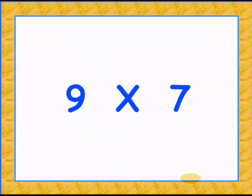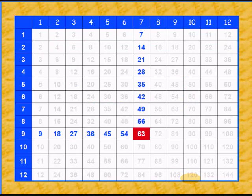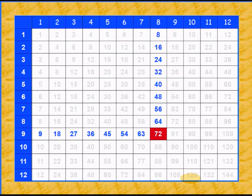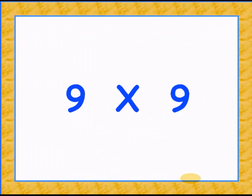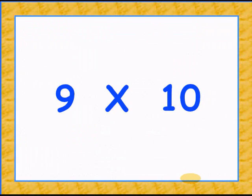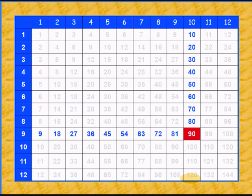9 times 7 is 63. 9 times 8 gives 72. 9 times 9 is 81. 9 times 10 is 90.